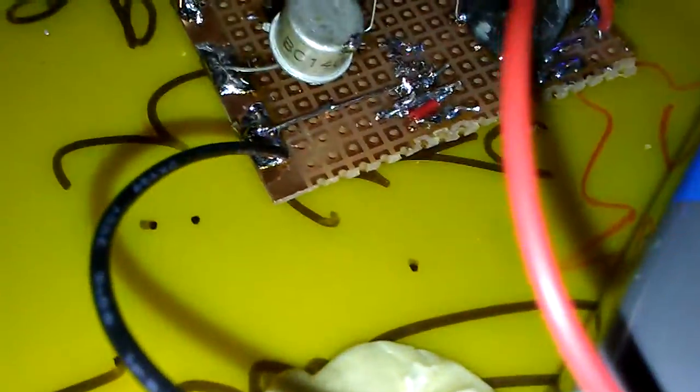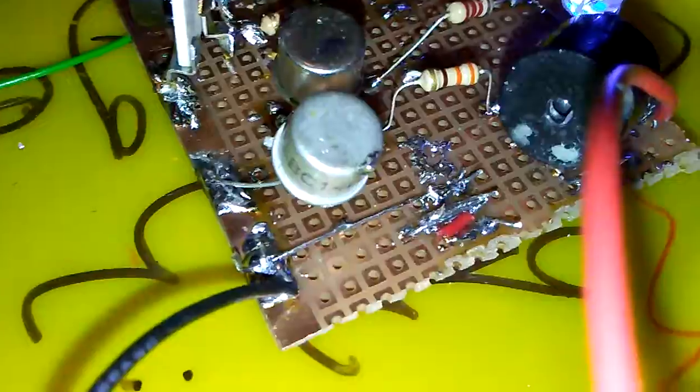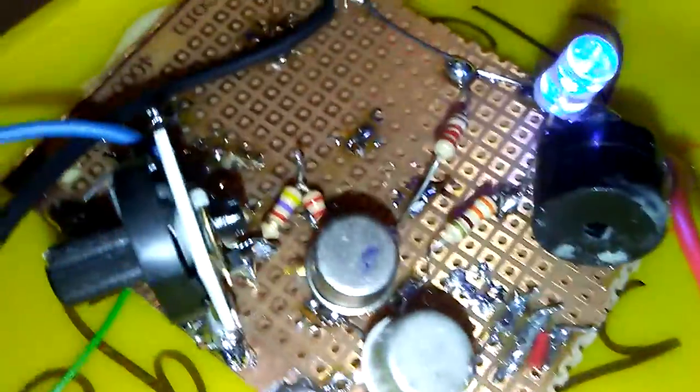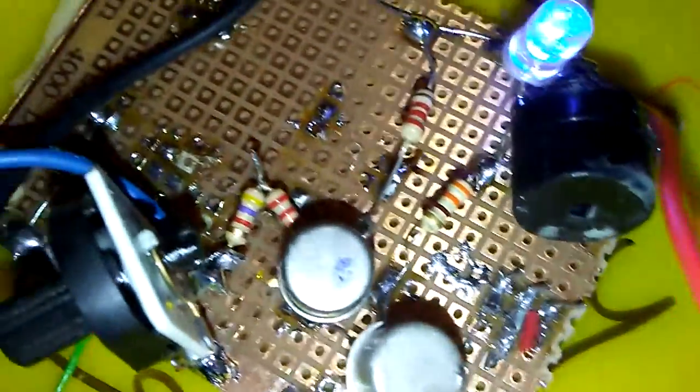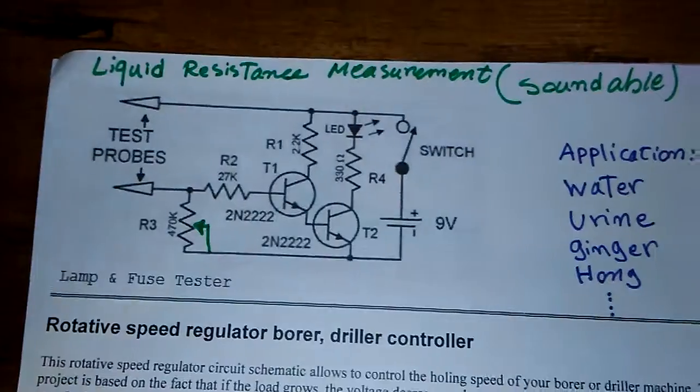The second transistor is 2N2219 because usually I'm using sensitive solutions to check the resistance.